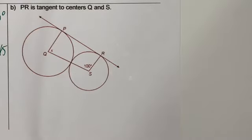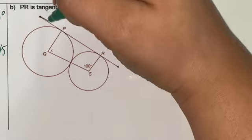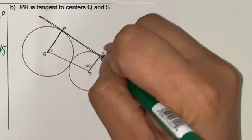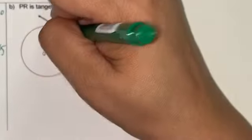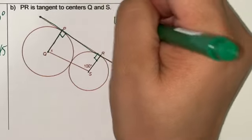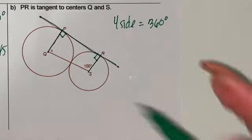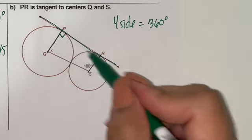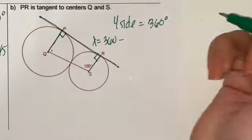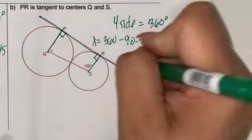PR is tangent to centers Q and S, so you get a right angle at Q and a right angle at S. We know that four sides equals 360 for a polygon. So x equals 360 minus 90 minus 90 minus 100, and x equals 80.